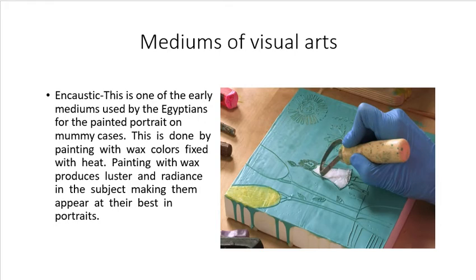The next medium is encaustic. This is one of the early mediums used by the Egyptians for painted portraits on mummy cases. It is done by painting with wax color fixed with heat. Painting with wax produces luster and radiance in the subject. The colors are applied with wax to create a luminous effect, and sometimes the wax is scrubbed to create another effect.